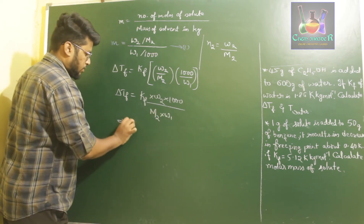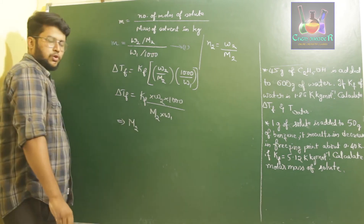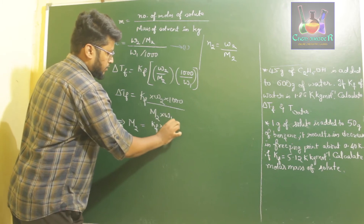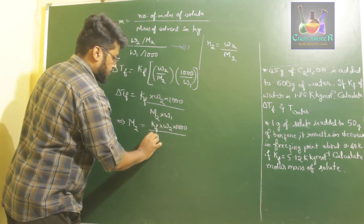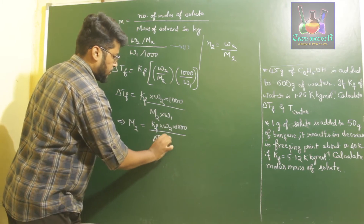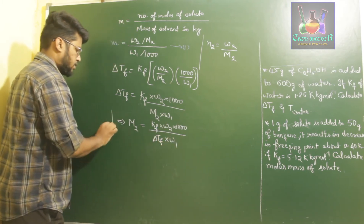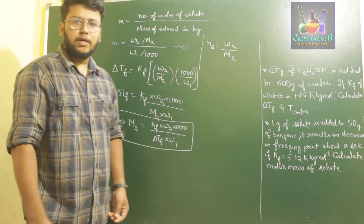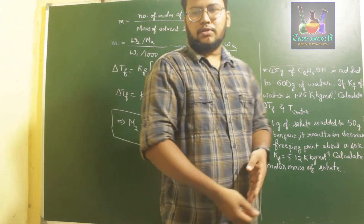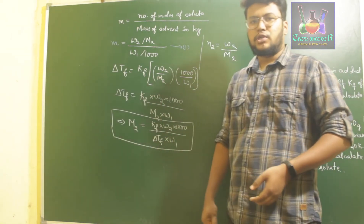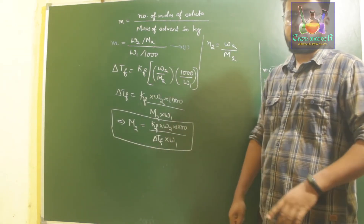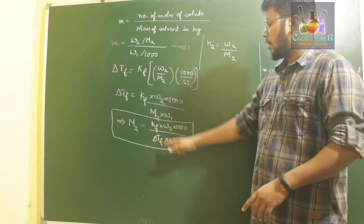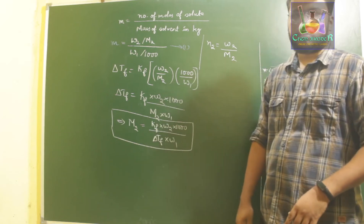So to find out the molar mass of the solute, M2 = Kf × W2 × 1000 / (ΔTf × W1). This is the equation used to determine the molar mass of a solute when the depression in freezing point and the cryoscopic constant are given.